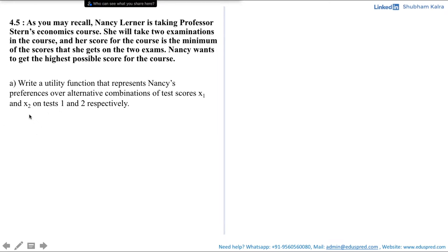We are given that X1 represents the score on first test and X2 represents the score on second test. According to the professor, a final score for the course would be the minimum of the scores that she gets on two exams.